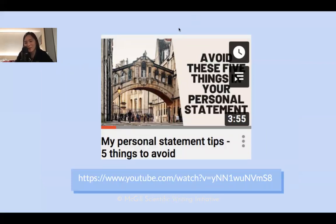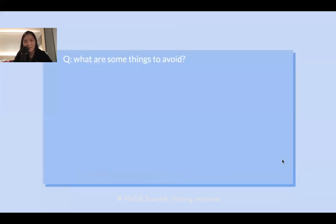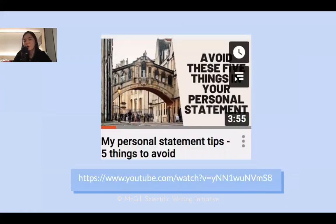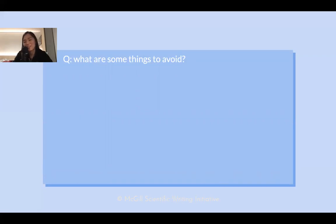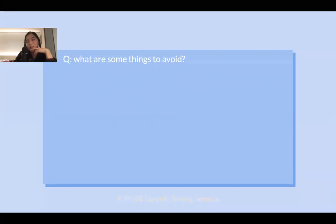I have a video on my YouTube channel about five things to avoid in a personal statement, based on a peer-reviewed paper where admissions committee members talked about the most common mistakes. What do you think are some things to avoid? Attendees suggested: rambling and not being concise, given the 500–1,000 word limit. Another attendee emphasized being genuine — it shows when you're not being yourself and trying to sound like someone else.